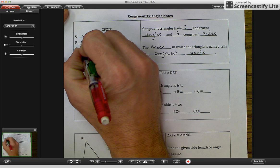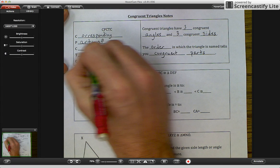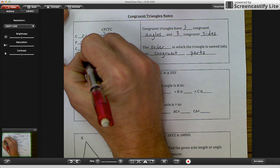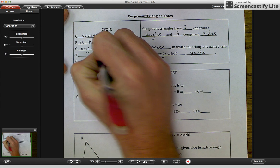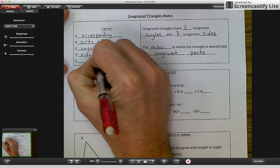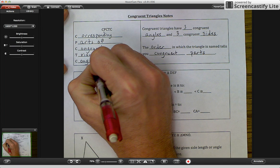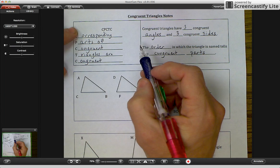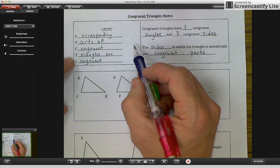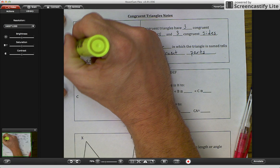So corresponding, the P stands for parts of. Corresponding parts of congruent triangles.